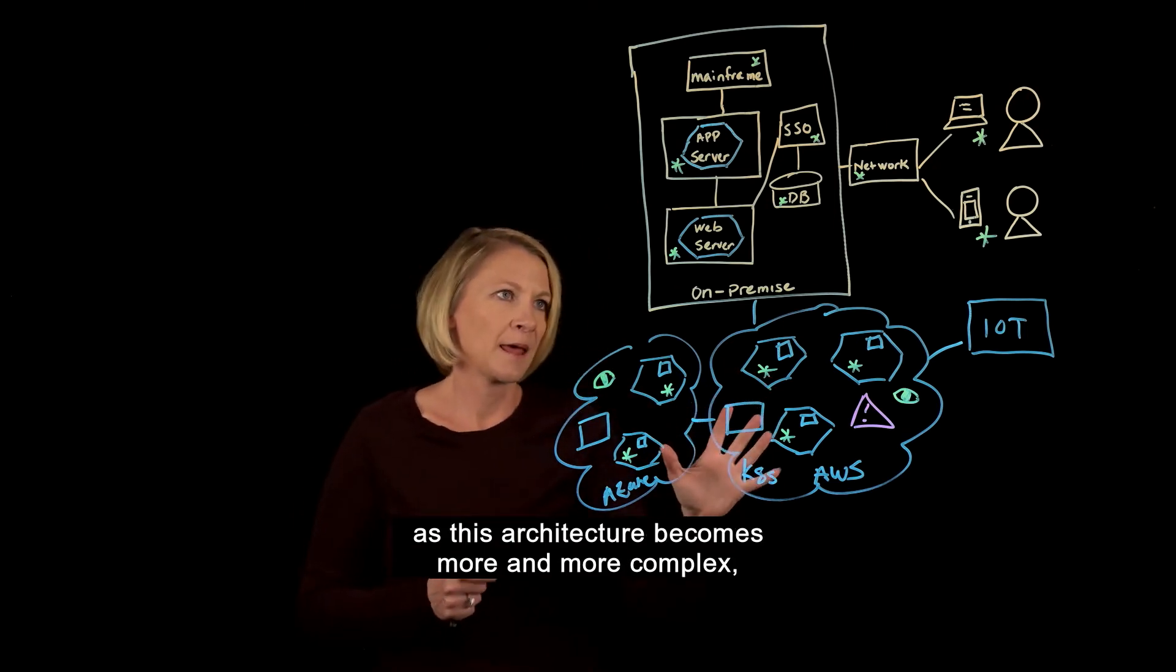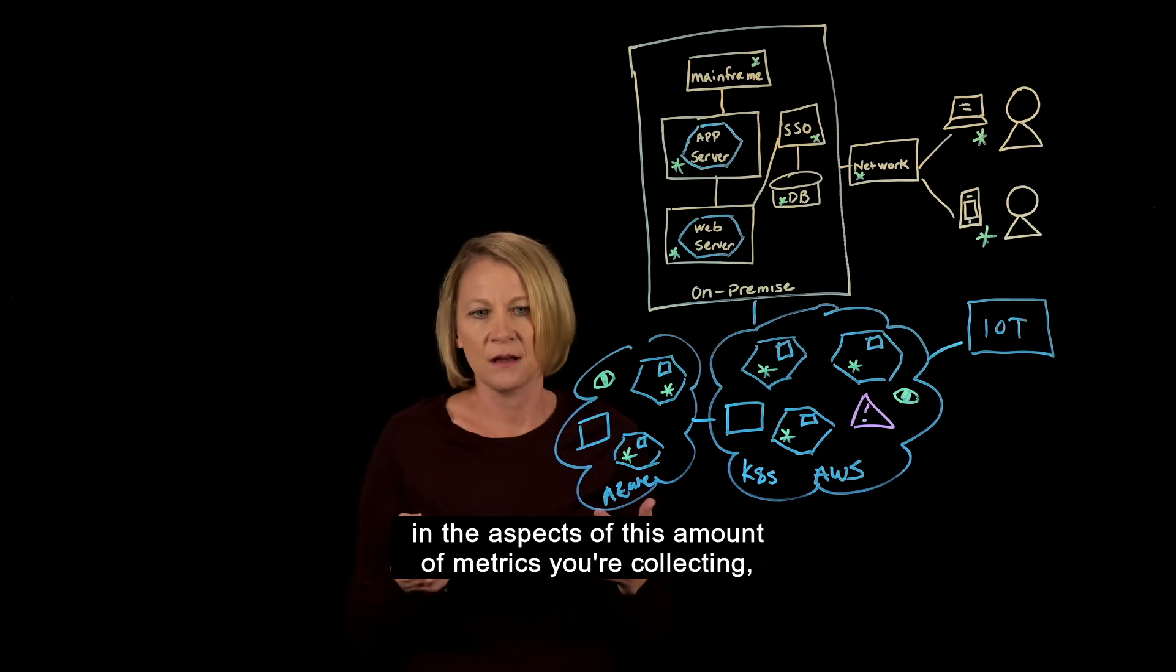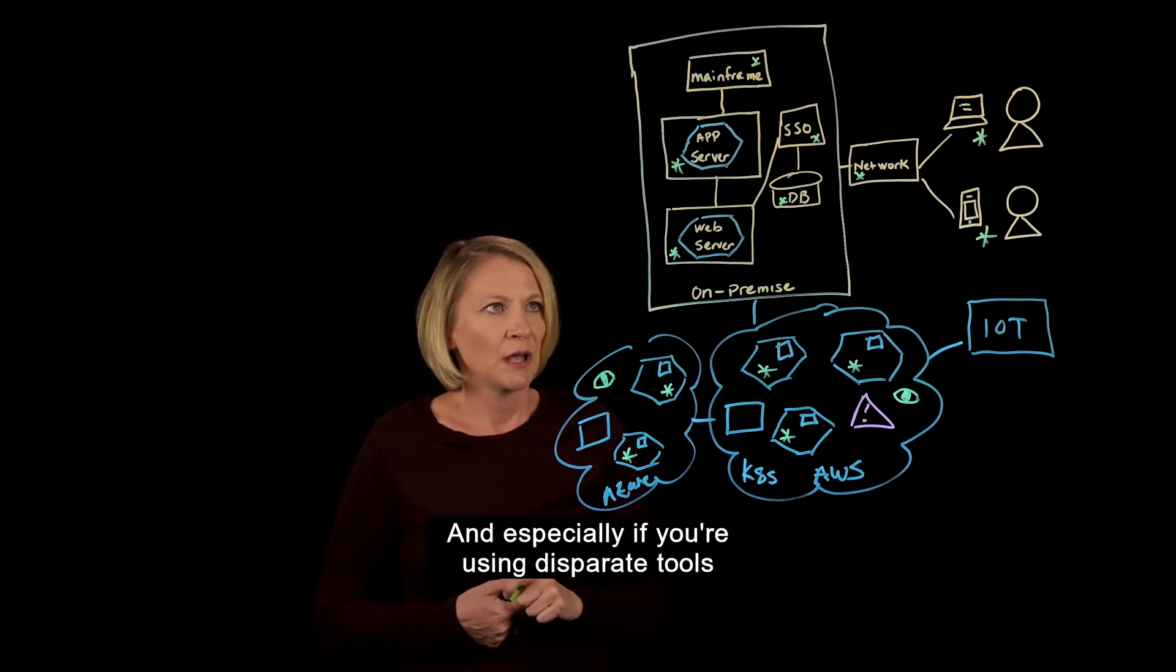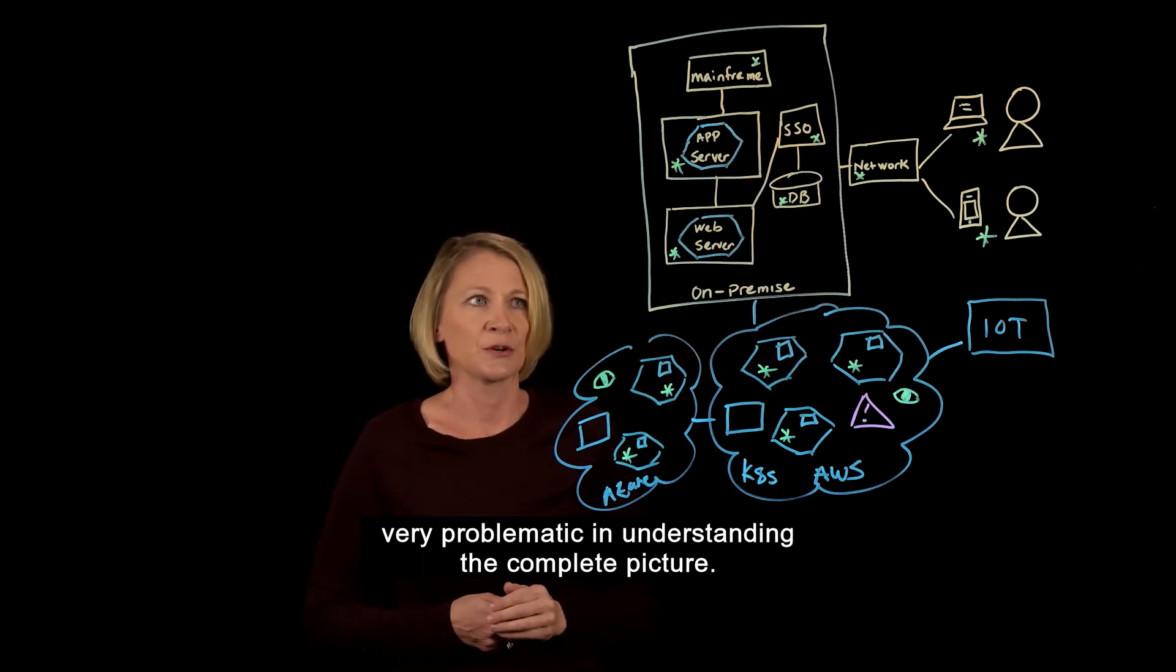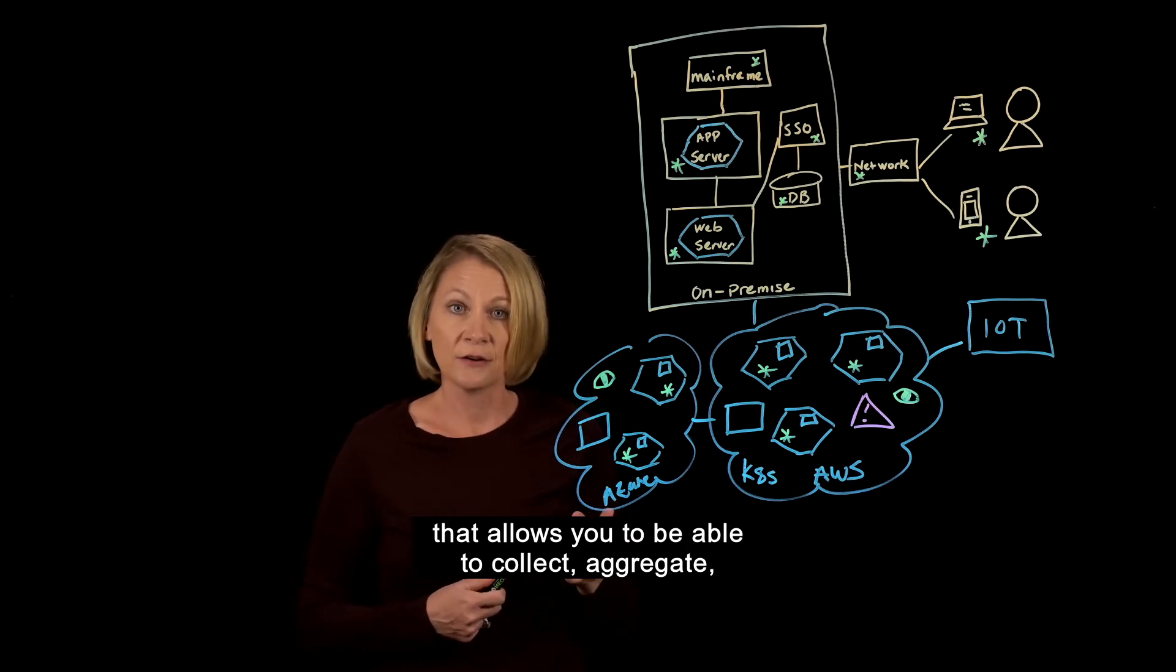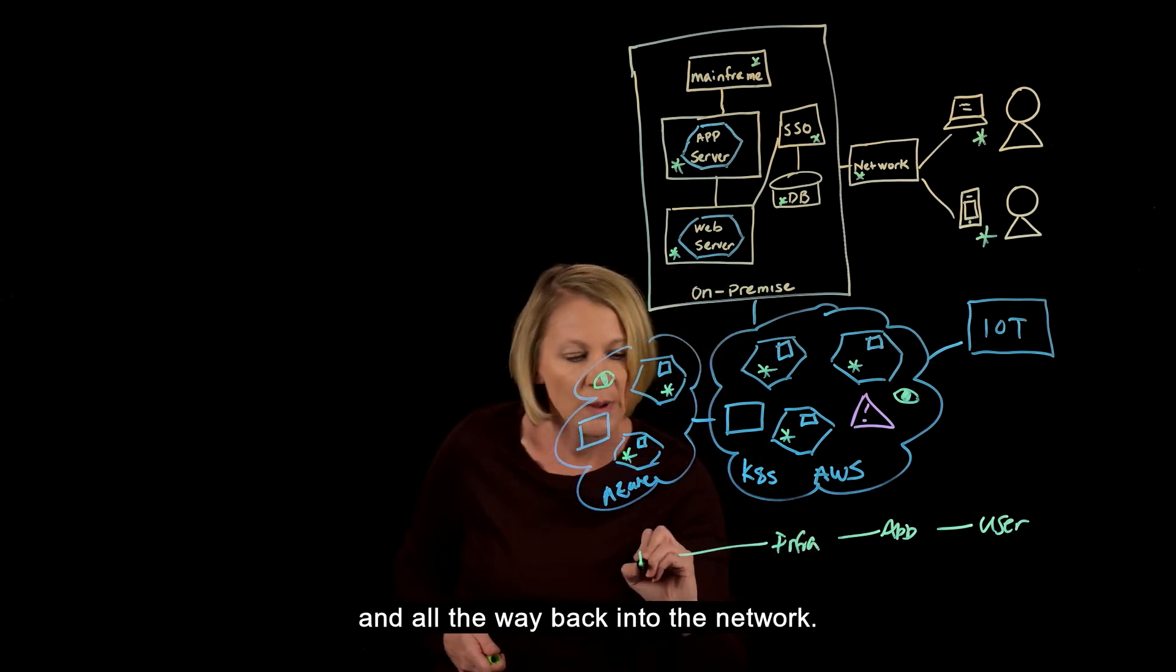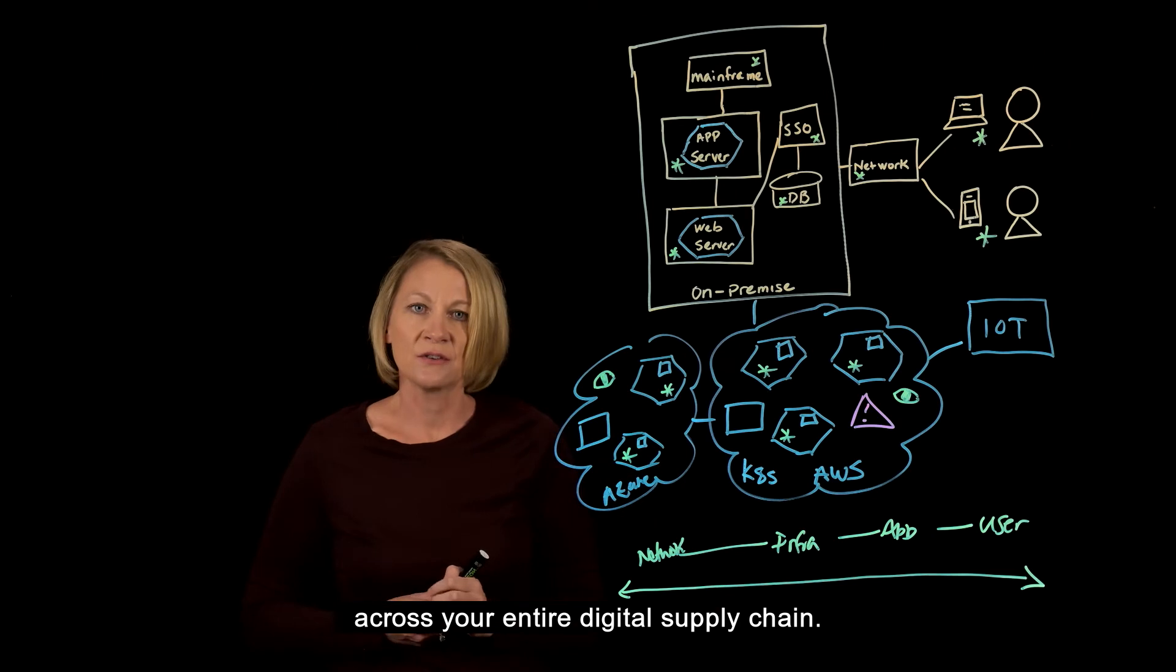Now as this architecture becomes more and more complex, you're adding so much more data in the aspects of the amount of metrics you're collecting, the amount of logs, the amount of alerts being produced by this environment. That volume of data becomes extremely hard to manage, and especially if you're using disparate tools to collect this information, it can become very problematic in understanding the complete picture. So what's needed is an AIOps solution that allows you to collect, aggregate, and analyze the information from the user, the application, the infrastructure, and all the way back into the network. This provides you that complete end-to-end view across your entire digital supply chain.